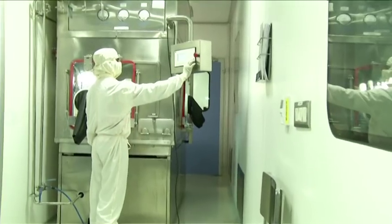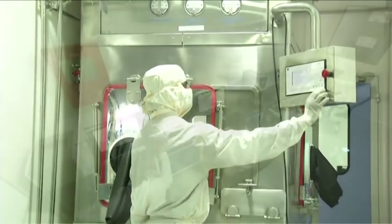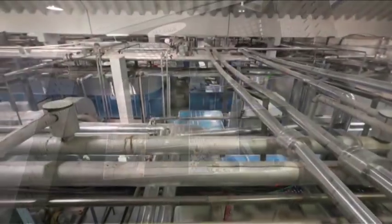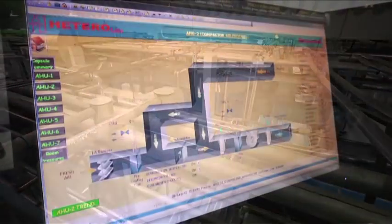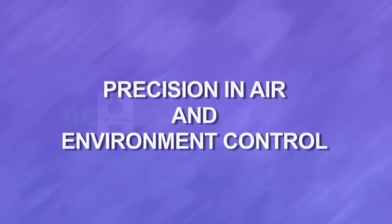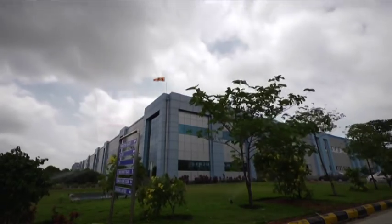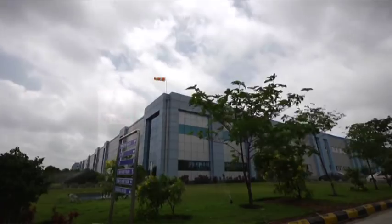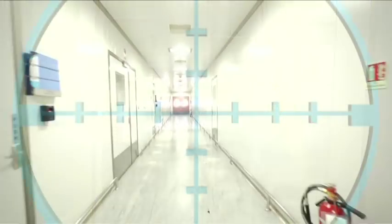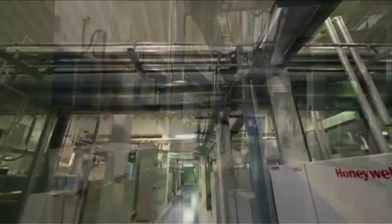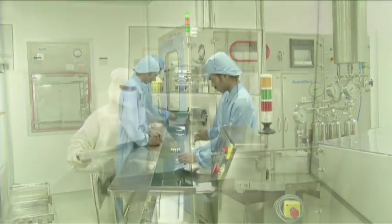The most stringent Class 100 sterile and decontaminated environment for these critical operations is controlled by the building management system which operates 24 by 7. Air and environment control plays a critical role in the manufacture of anti-cancer molecules, the reason why Hetero lays emphasis on nothing but the best technology to purify air to the highest levels. This apart, the most sophisticated systems are used to control the temperature and humidity as required across the various areas of manufacturing and packaging.